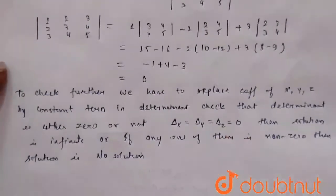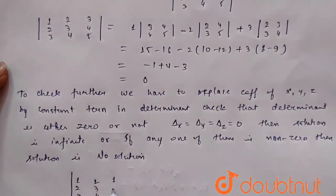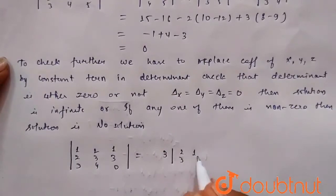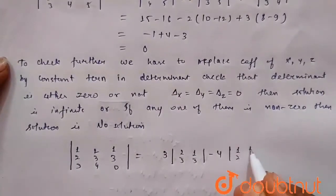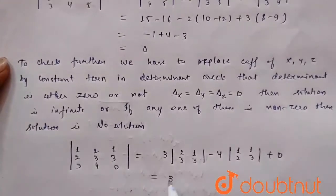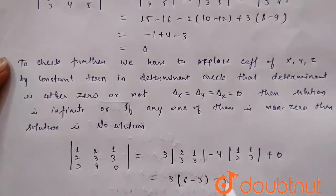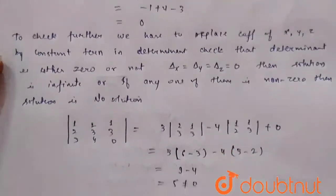So here by replacing the coefficient of z by constant term 1, 3, 0, the determinant is like that on opening with 3, 6 minus 3 minus 4, 3 minus 2, so 9 minus 4 which is 5 which is not equal to 0.